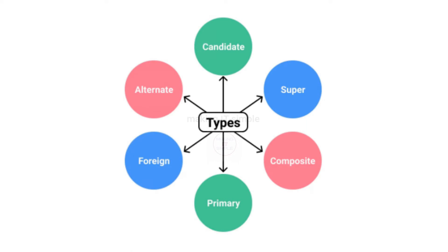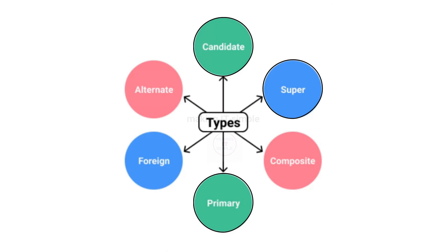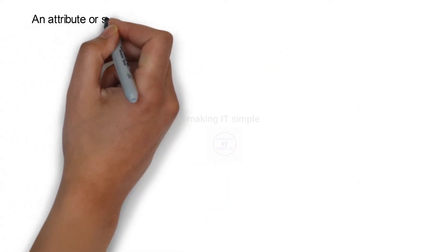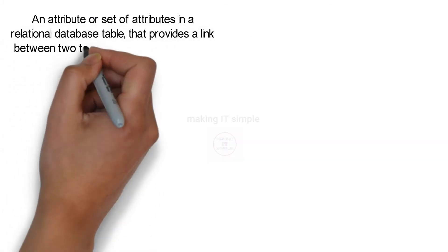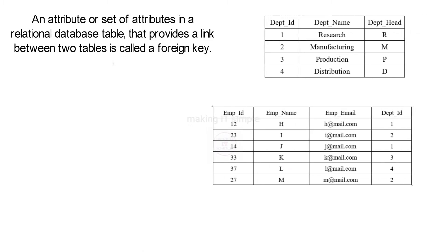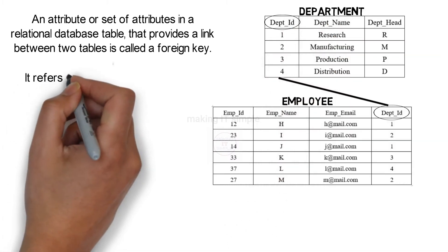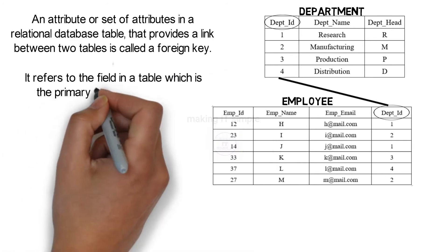In previous videos I have explained about primary key, super key, and candidate key. If you have not watched them, definitely do check them — links are present in the description below. So let us see the definition of foreign key. The definition states that an attribute or set of attributes in a relational database table that provides a link between two tables is called a foreign key. As we saw in the example, department ID is the attribute that provides a link or relation between two tables — in this case the employee and department table.